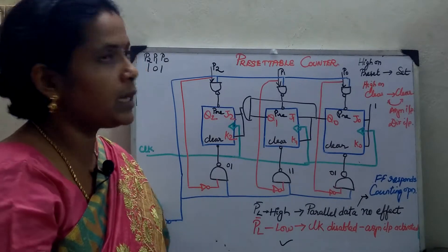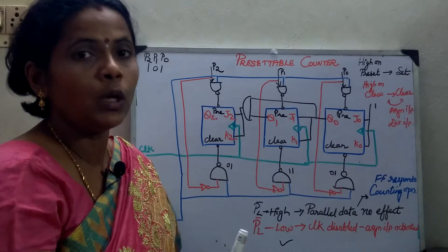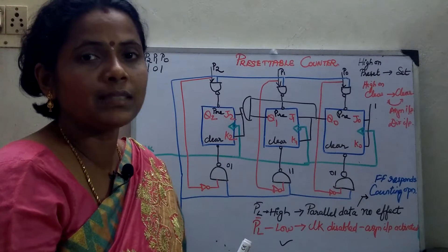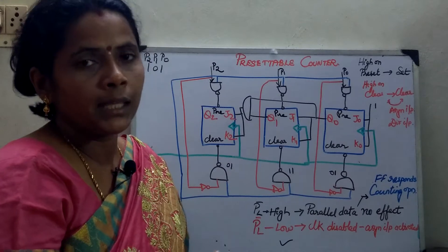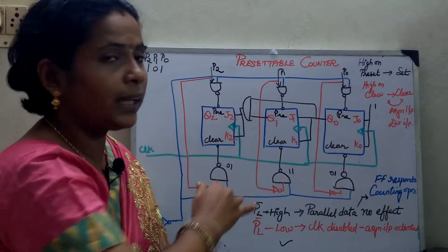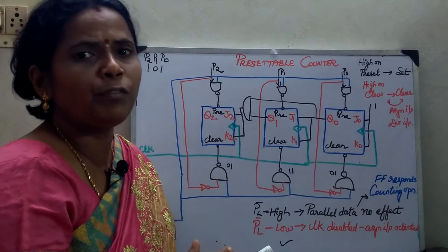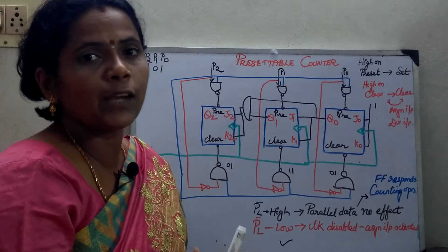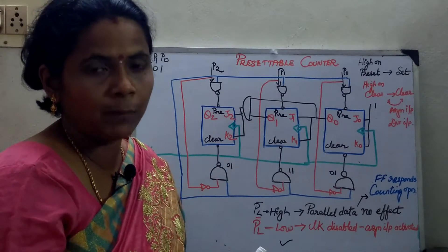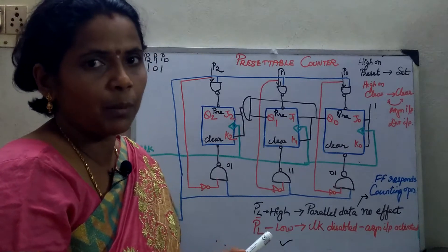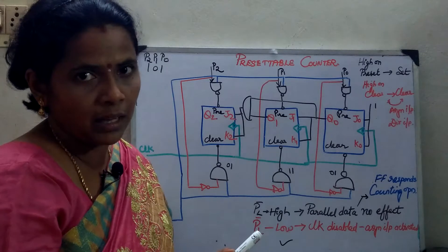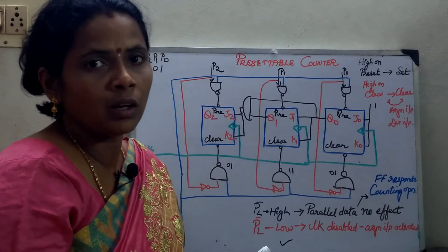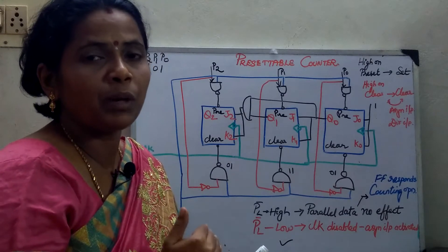What do you mean by a pre-settable counter? The synchronous counters available today have ICs with the pre-settable concept integrated into them. That means the counter can count from any sequence — not just 0 to 15, it can count from 6 to 19 also. Any sequence required by the application can be used, whether asynchronous type or synchronous type checking with a clock signal.